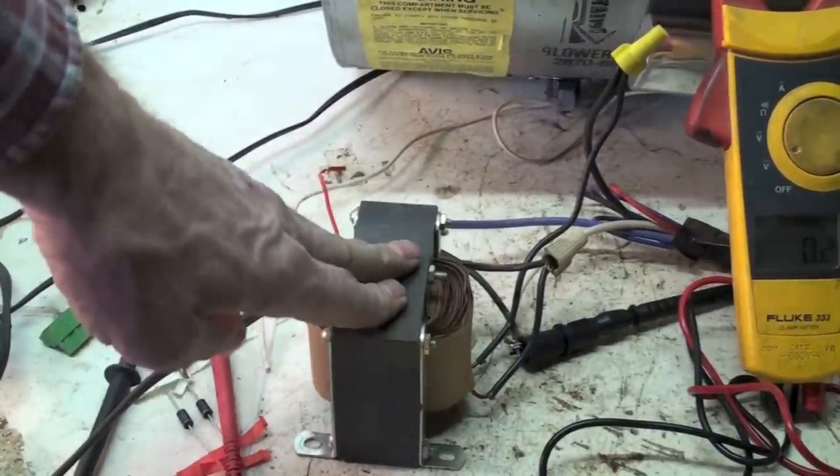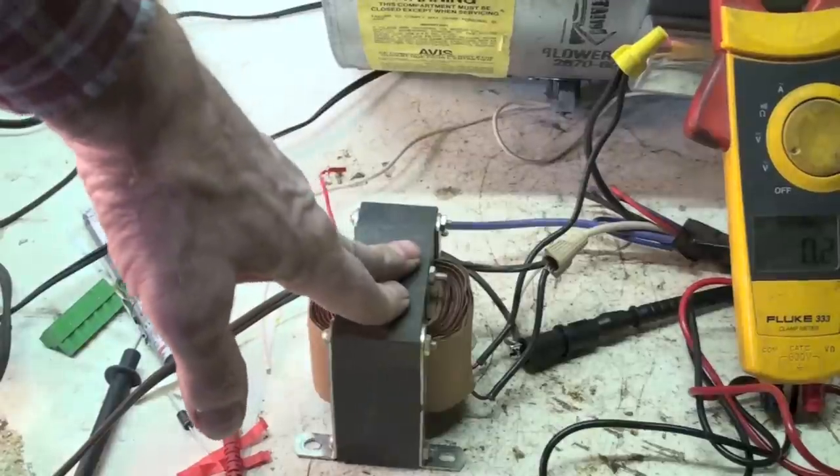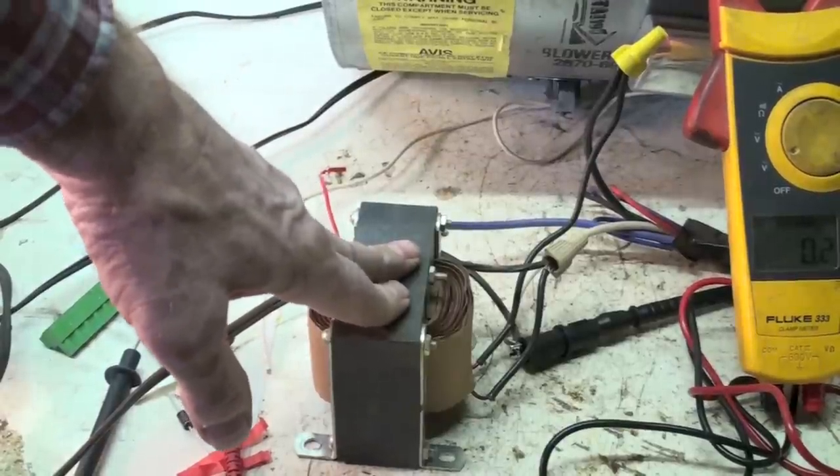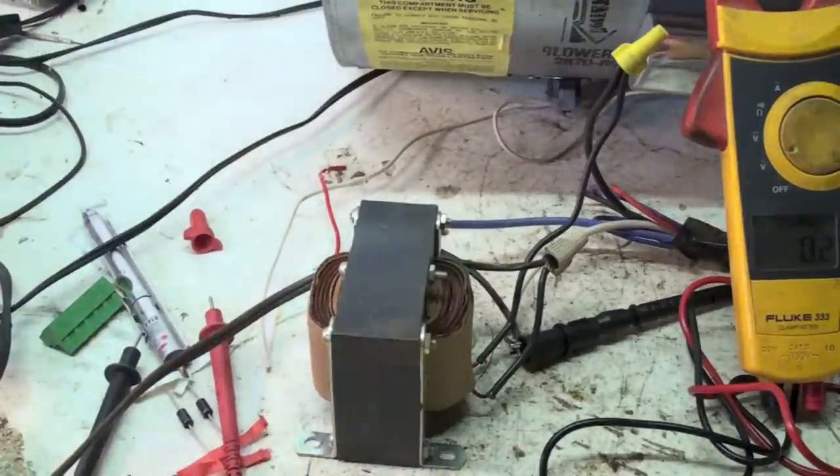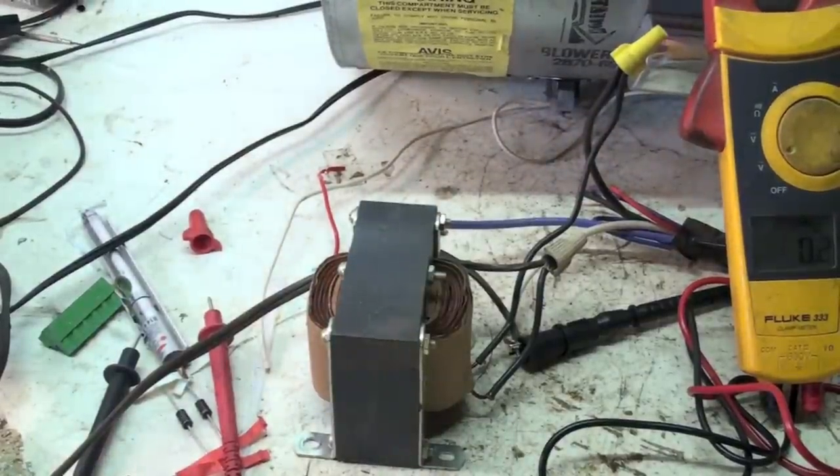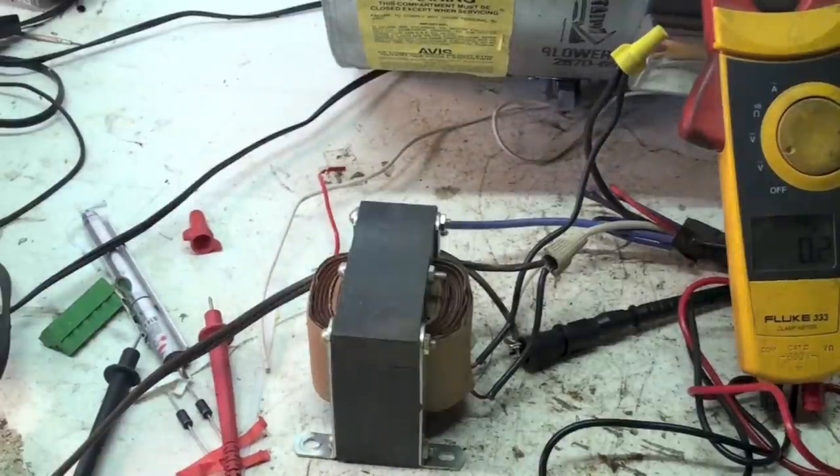But it controls both voltage and amperage going through the motor. So that's what the choke coil does.